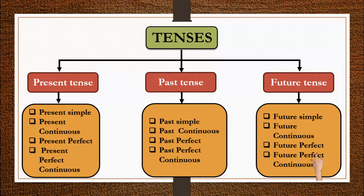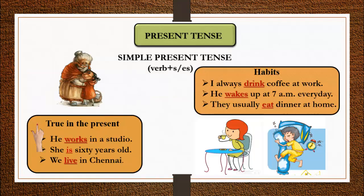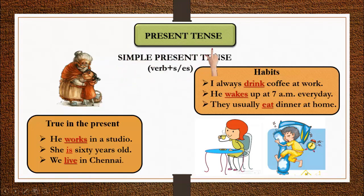Today we will talk about present tense. Present tense refers to an action which is happening right now. The first sub-type is simple present tense.